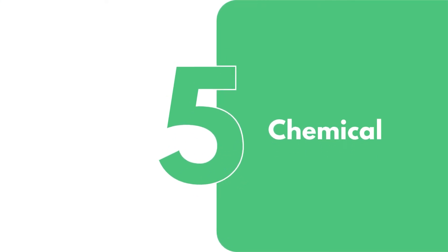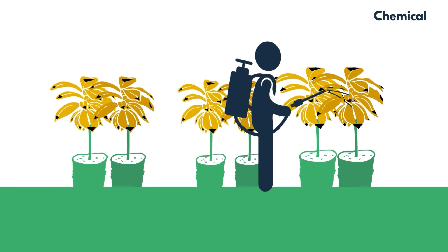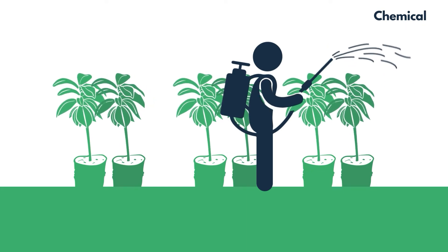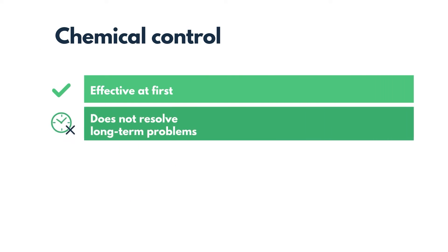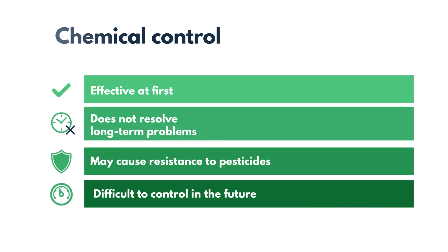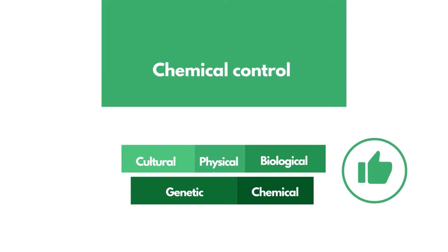5. Chemical Control: Using pesticides. It is not recommended to use chemical control without other supporting control methods. Although it can be effective at the beginning, it does not solve the problem of disease and pest occurrence over time. In addition, sustained use of the same chemical molecules on a pest can cause it to generate resistance to the applied product, making it more difficult to control in the future. By combining multiple control methods, pest and disease impact will decrease over time.